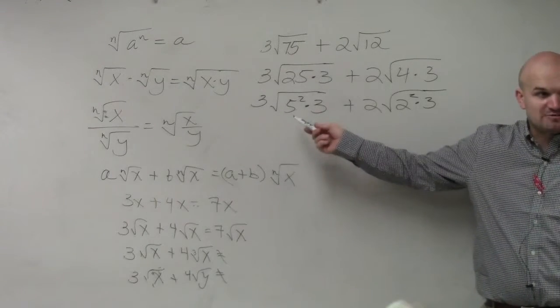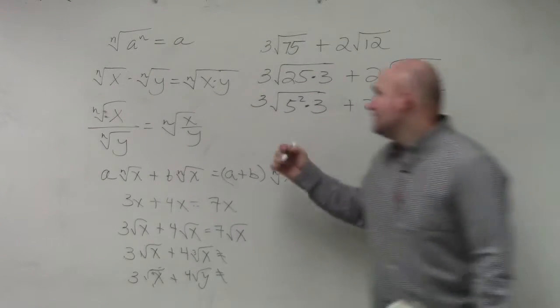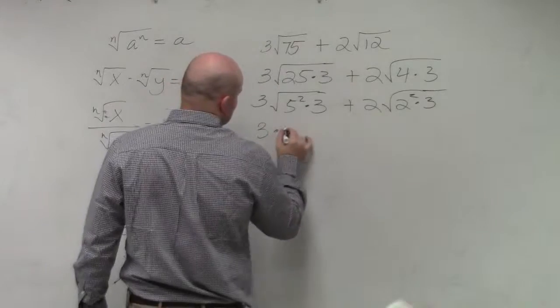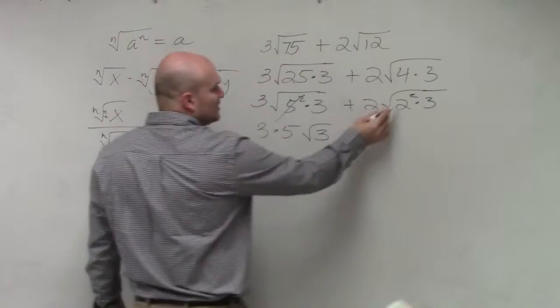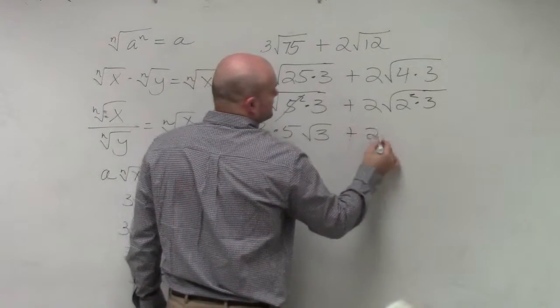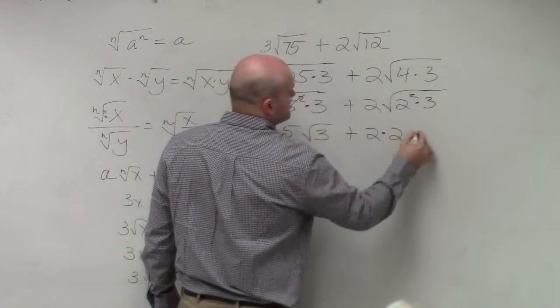Now, can I take the square root of 5 squared? Yes. So that equals 3 times 5. I can't take the square root of 3, so that remains there. Square root of 2 squared is 2 times the square root of 3.